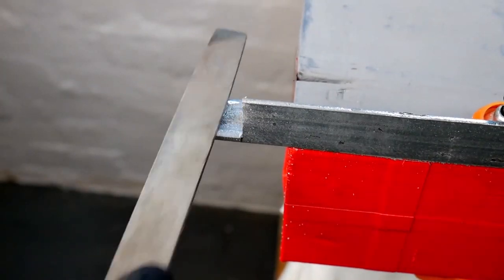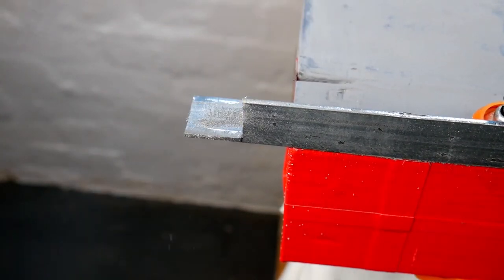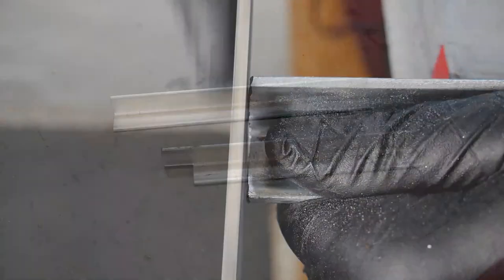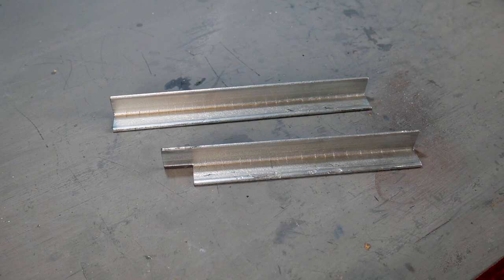Then I file off any excess to meet the other flat side of the angle and file off any rough or sharp edges. Now I have the two main parts of the body of the tube bender.